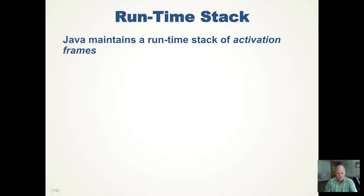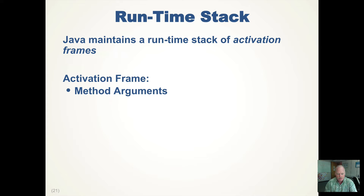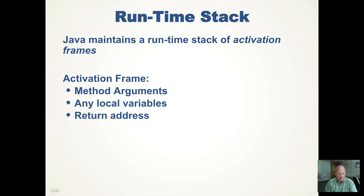So how does Java manage this calling a method inside of a method inside of a method thing? Java maintains a runtime stack for all method calls called activation frames. Every time you call a method in Java, it creates an activation frame. An activation frame contains all the method arguments, any local variables available at the time you call the method, and the return address of where the program is going to continue executing when we return from that method call.